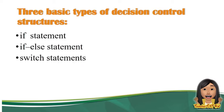These are the three basic types of decision control structure: the if statement, the if-else statement, and the switch statement.